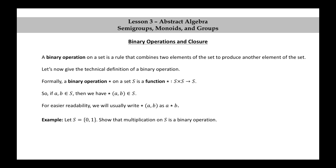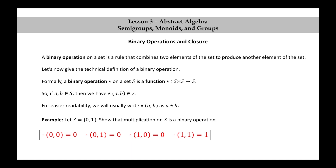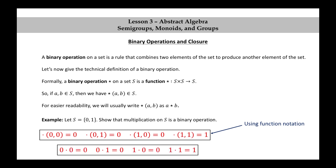Let's look at that first example again. Let S equal the set consisting of 0 and 1. Show that multiplication on S is a binary operation. Using function notation: dot(0,0) = 0, dot(0,1) = 0, dot(1,1) = 1. But of course, we're usually going to use our abbreviated notation: 0 times 0 is 0, 0 times 1 is 0, 1 times 0 is 0, and 1 times 1 is 1. This is the notation we'll usually use for easier readability.